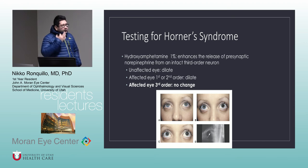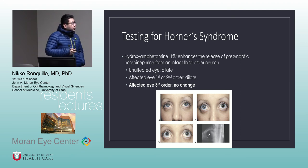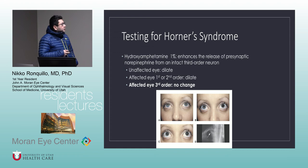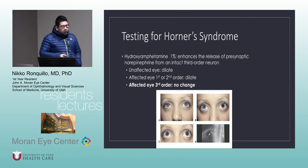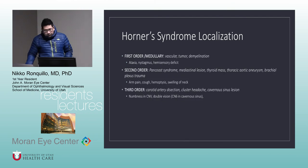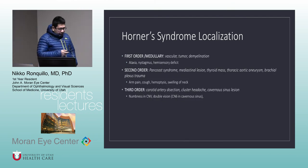The last test for Horner's, usually not done in clinic, is hydroxyamphetamine, which tries to localize the lesion to first/second order (presynaptic) neurons versus third-order neurons. It enhances release of presynaptic norepinephrine from an intact third-order neuron. In the unaffected eye it causes dilation. In the affected eye, if first or second order neurons are affected it will dilate; if the third-order neuron is the problem, there is no change.